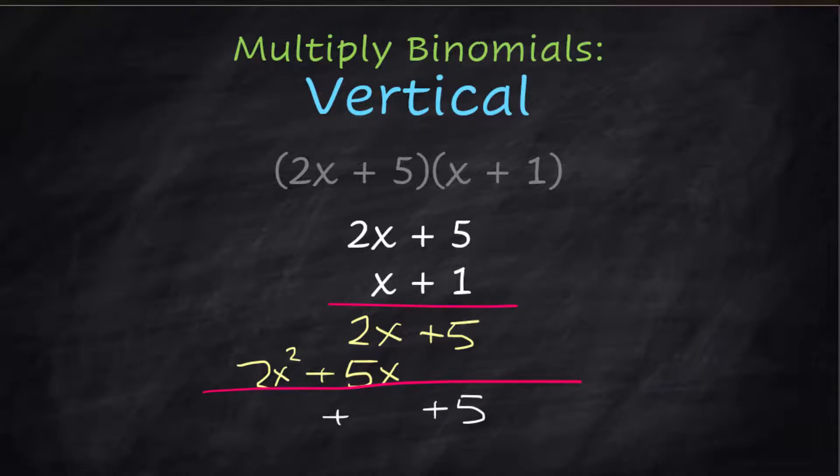2x and 5x, that is a plus 7x, and 2x squared. And that's the same answer we got before. It's just a different way to organize it, and you may prefer this one.